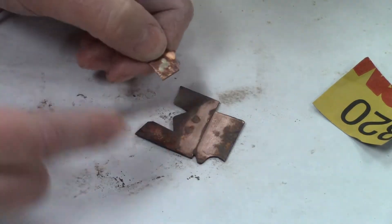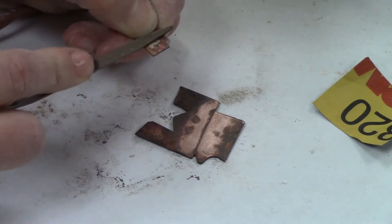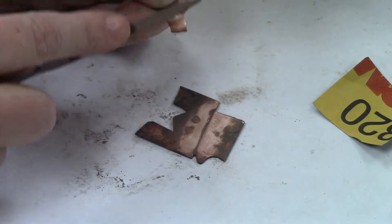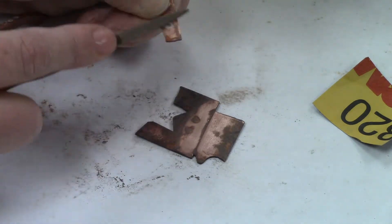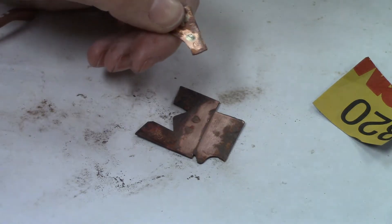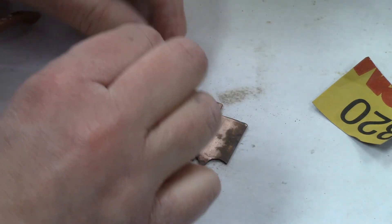Take a file and just very lightly file the top of the mounted solder so that it becomes a little more flat. Just a couple times over with the file will be good enough to flatten off an area so that we can put these together.